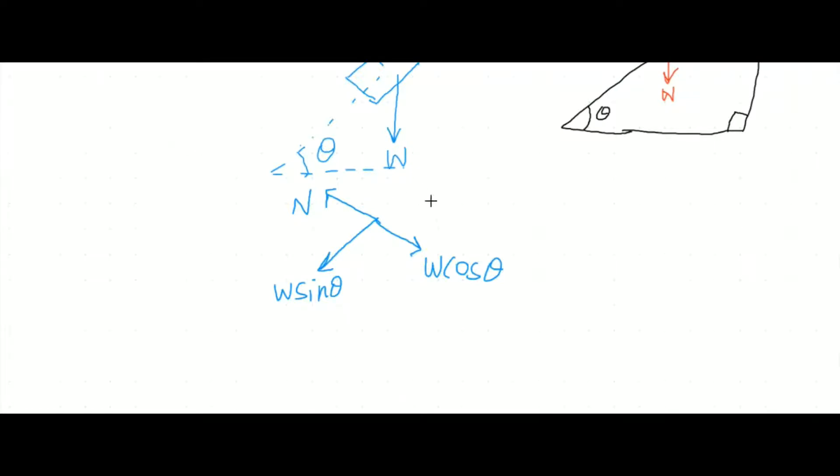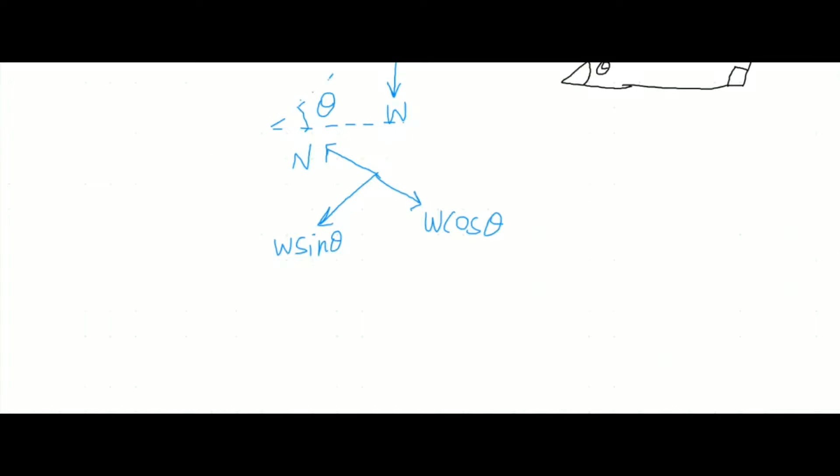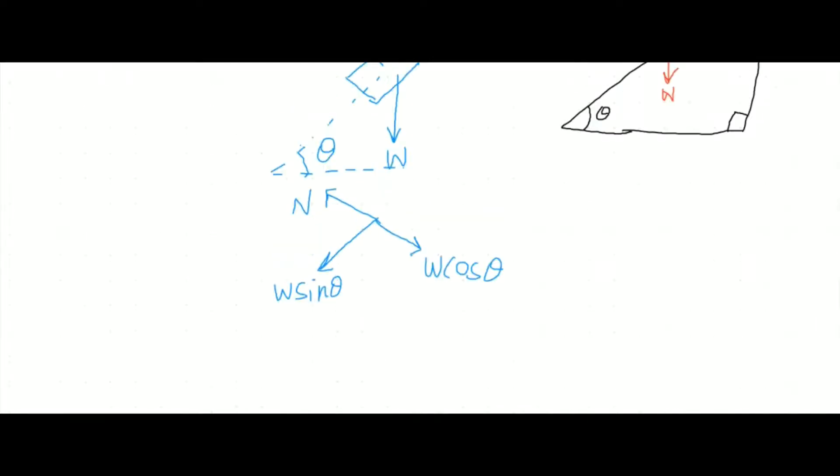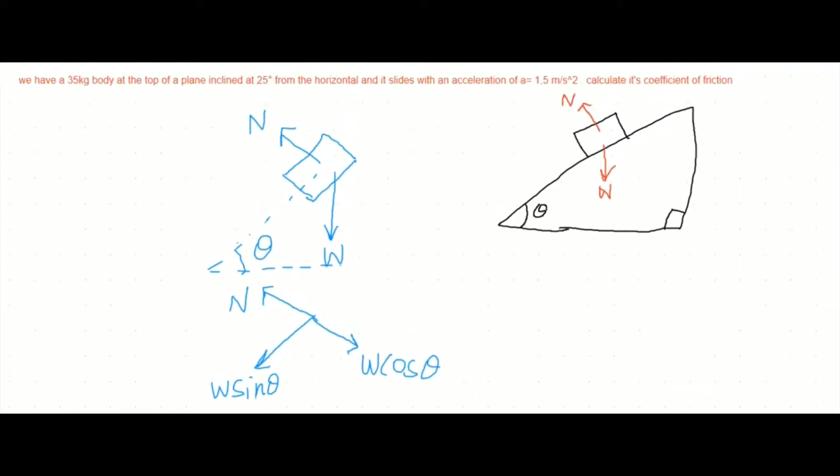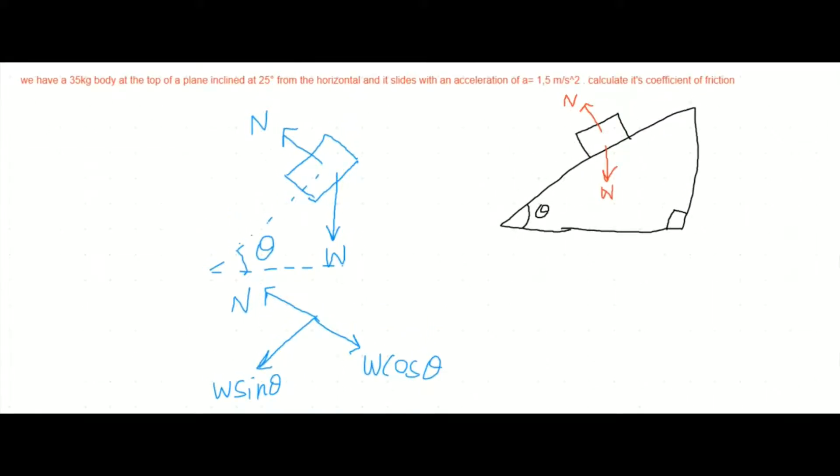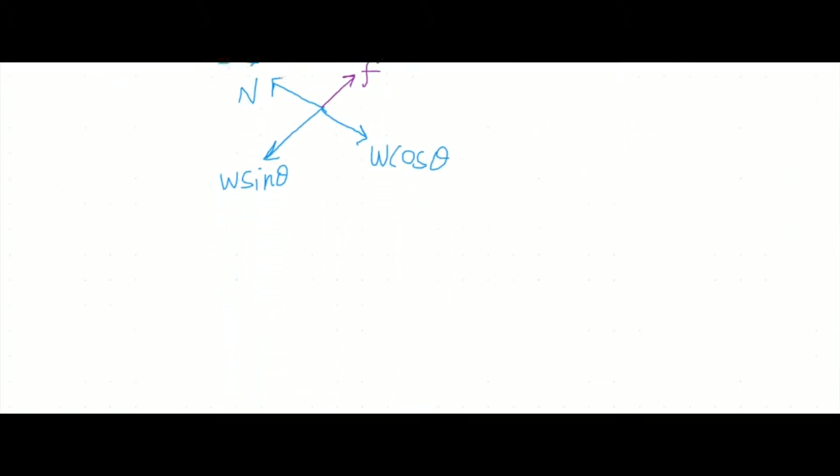But there is another force which is friction. Over here we will see that the tendency of this block is to move towards this side, so the friction will act opposite to it, denoted by a small f. We will include the friction in our free body diagram as well. So now we have a total of four forces which are acting on this block and now we have to make the equations with respect to the acceleration.